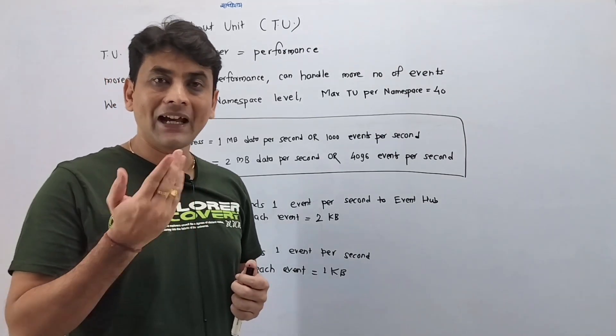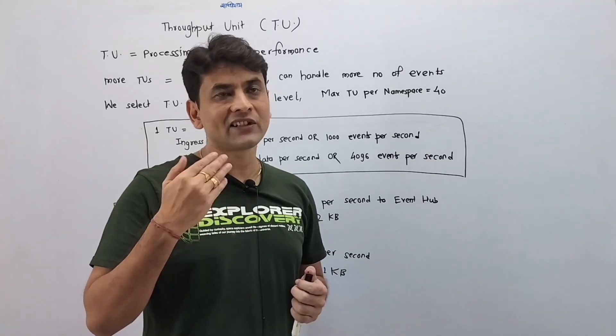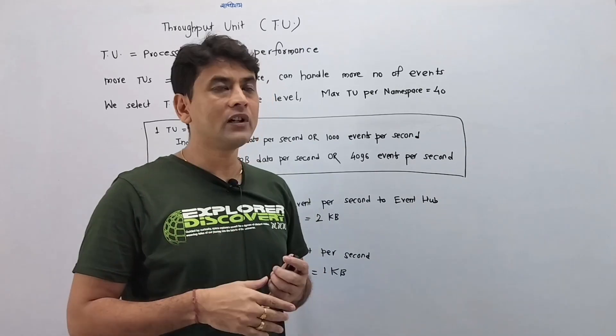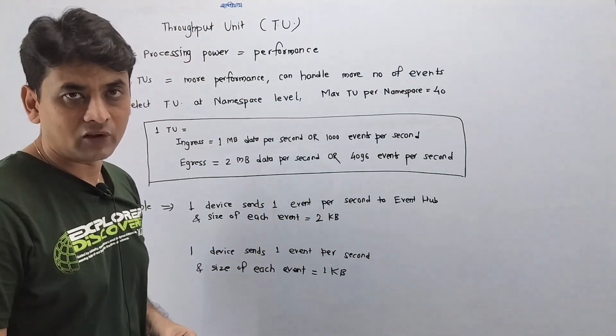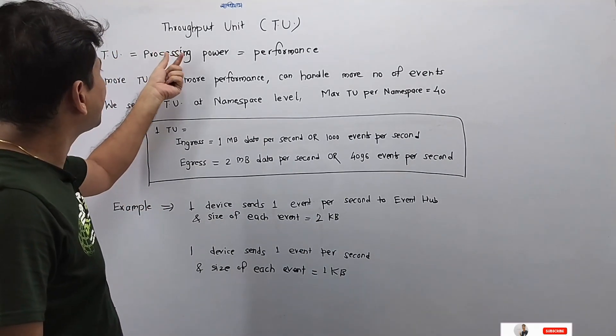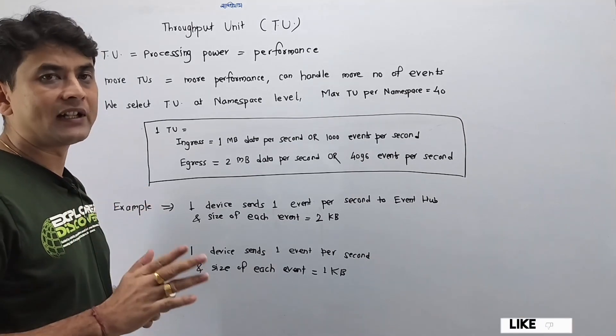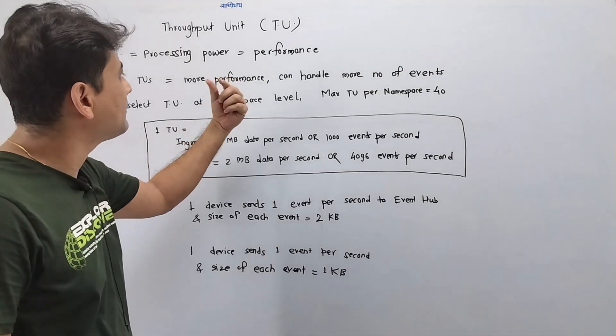...that means behind the scene it needs some processing power, right? It needs CPU, RAM, etc. That processing power is provided by throughput units, or TU. In simple words, TU is like processing power. It reflects the performance of Event Hub. More TUs means more performance, and that means Event Hub can handle more events.